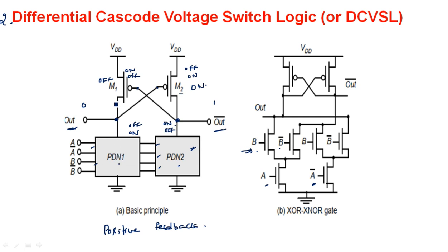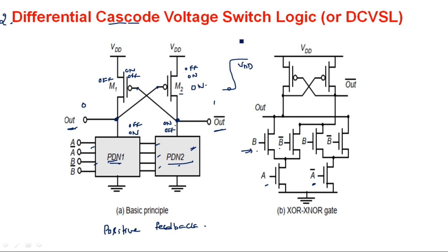Whenever a pull down network is in the on state, current flows, causing the corresponding PMOS transistor to turn on while the other turns off. The outputs have 100% voltage swings from 0 to VDD. The term cascode refers to the different combination of pull down networks — PDN1 with true form inputs and PDN2 with complemented inputs. As they are cross-coupled, it is called differential cascode voltage swing logic, and the advantage is to avoid static current flow.